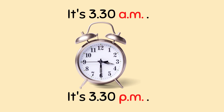For example, the clock shows 3:30 AM — or you can say half past three AM. If it's in the evening, you say it's 3:30 PM. It's based on the time you're looking at the clock.